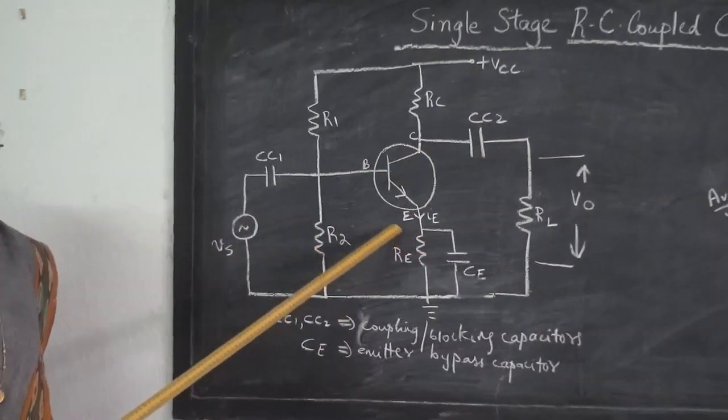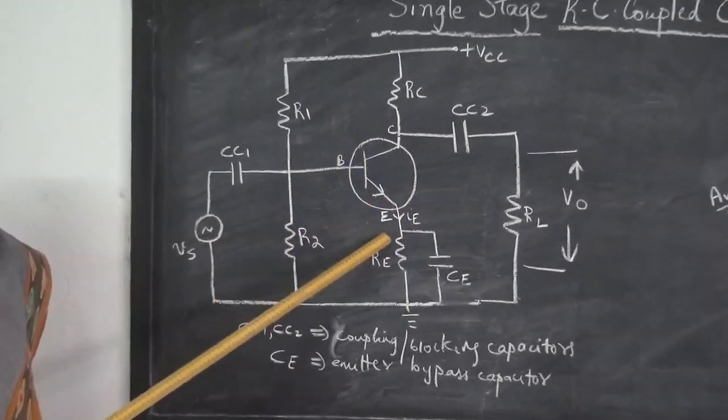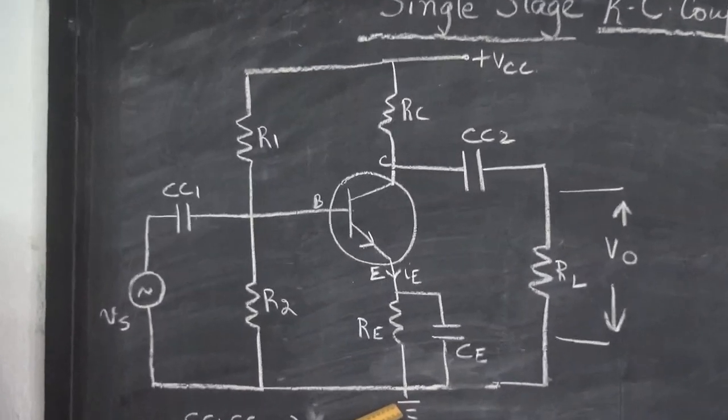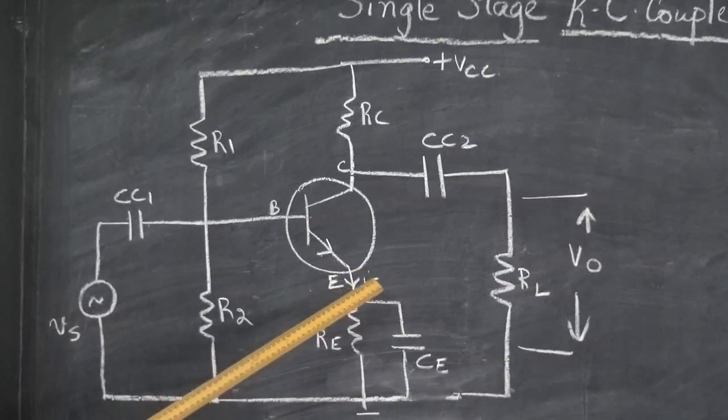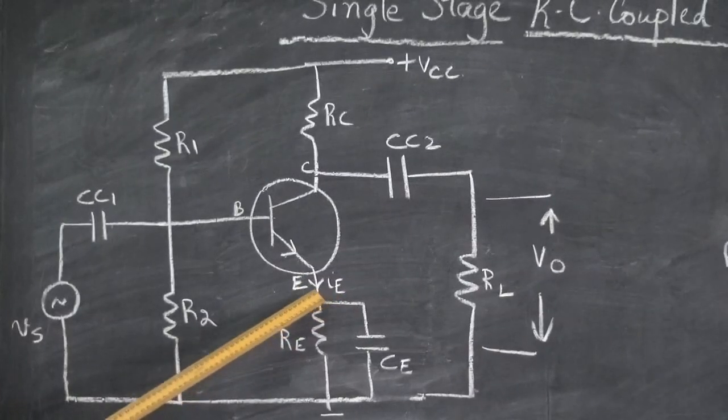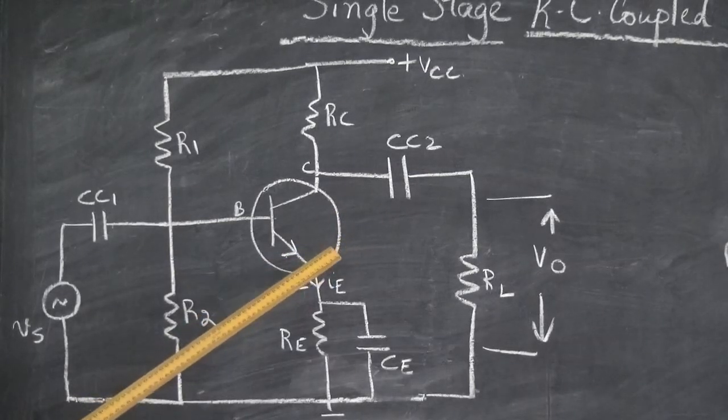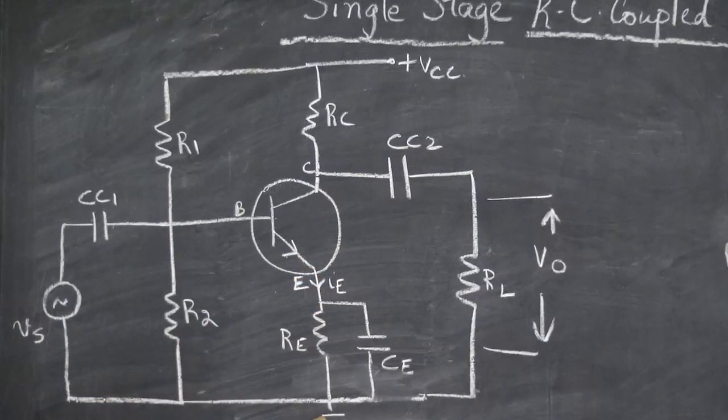So this is the circuit diagram of an RC coupled amplifier. I have a transistor here which is in common emitter configuration. We have already learned that among the three configurations, common emitter configuration is best suited for an amplifier. And the most important application of a transistor as we all know is an amplifier. So this is the transistor in the common emitter mode.